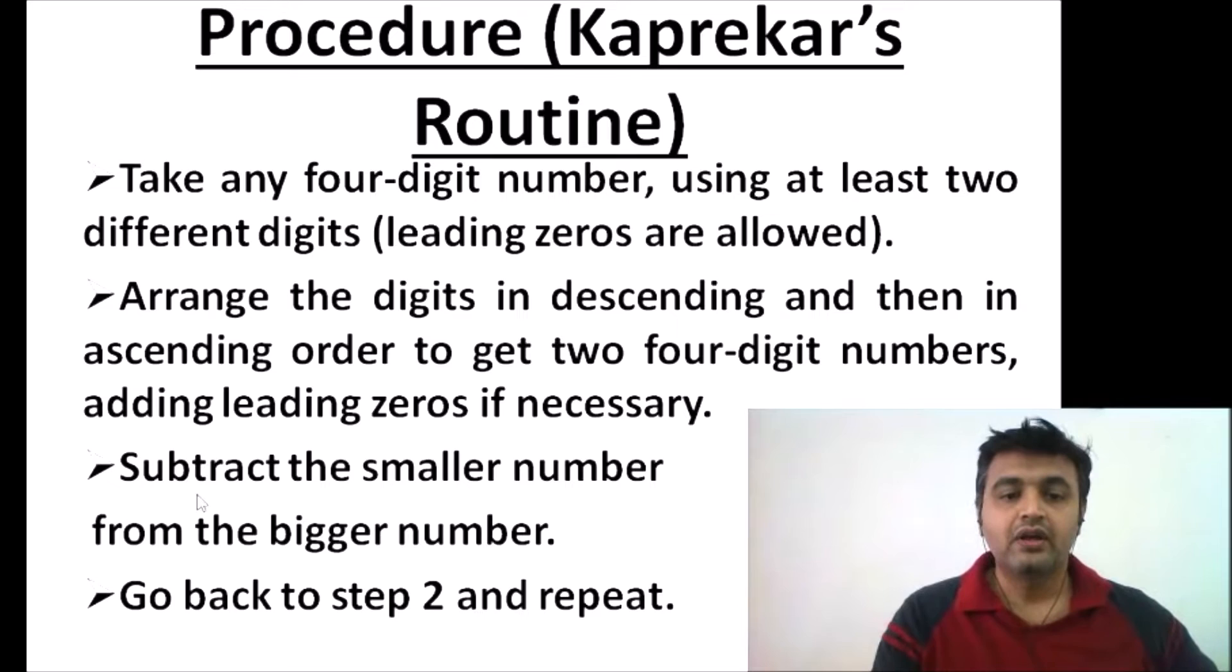Subtract the smaller number from the bigger number. Whatever number you get, repeat the same procedure: arrange in descending order, arrange in ascending order, subtract. Whatever number you get, repeat the procedure again, and at the end you will arrive at 6174.